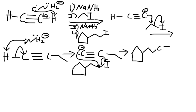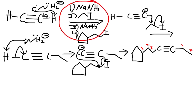So we have a final product with carbons from both alkyl halides added: one, two, three carbons on one side, and one, two carbons on the other, which is exactly what we had from our reagents.